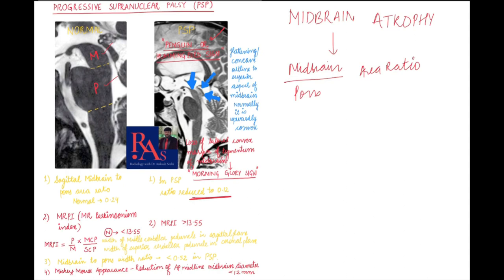The penguin or hummingbird sign refers to the flattening or concave outline of the superior aspect of the midbrain. Ideally it should be convex, but due to midbrain atrophy, flattening and concavity develop. This appearance is known as the penguin or hummingbird sign.